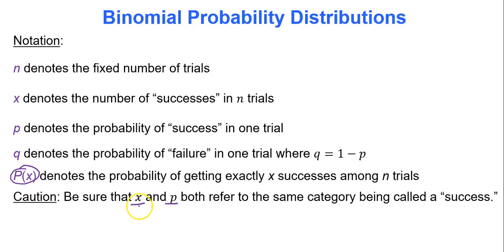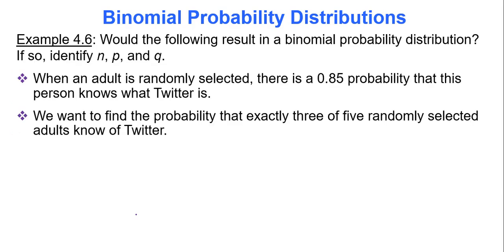One other thing: a success is not always necessarily a good thing. When talking about diseases and survival rates, a success could be someone dying from a specific condition. It could be giving a drug trial and a success is the person gets a headache. It's whatever is being observed — not always a positive thing.